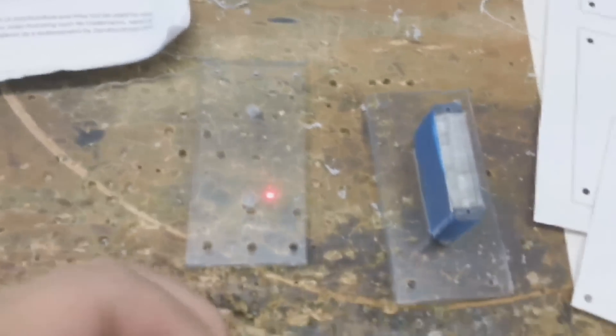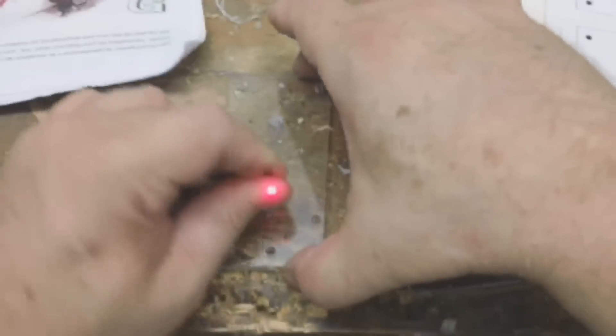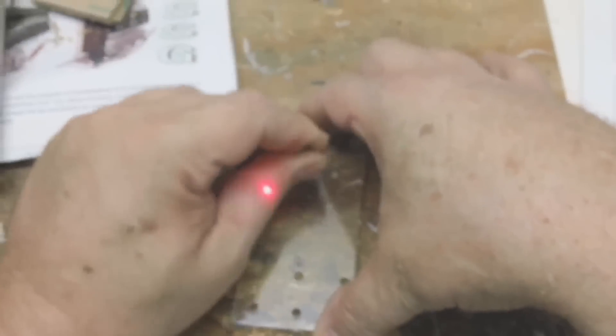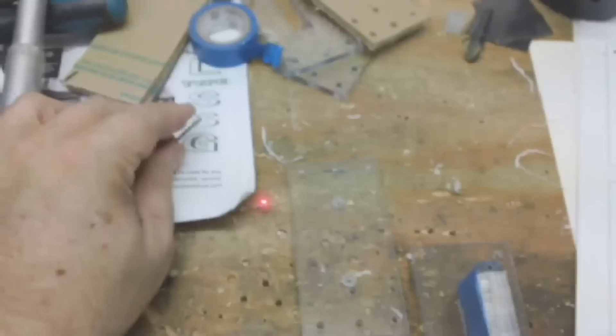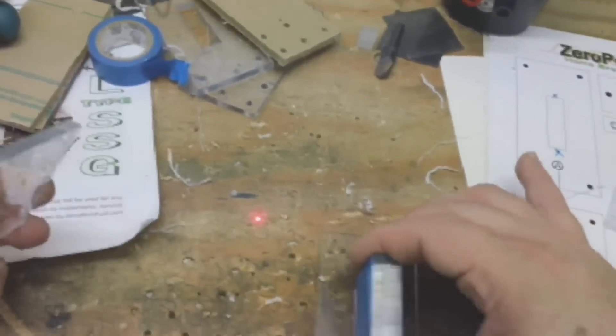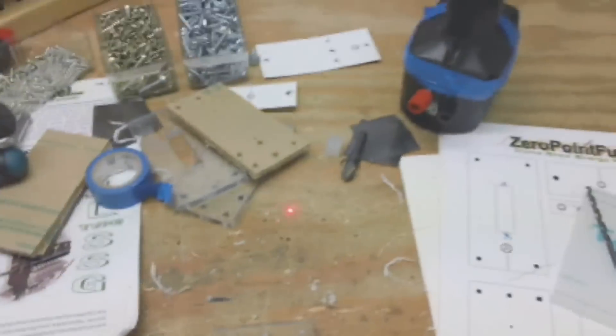By recessing that, it lets it fit in the jig better. I was using countersink screws at one time, so it was a necessity. But now with these screws I'm using here, they're a little harder and they're actually making this whole process work a little better.